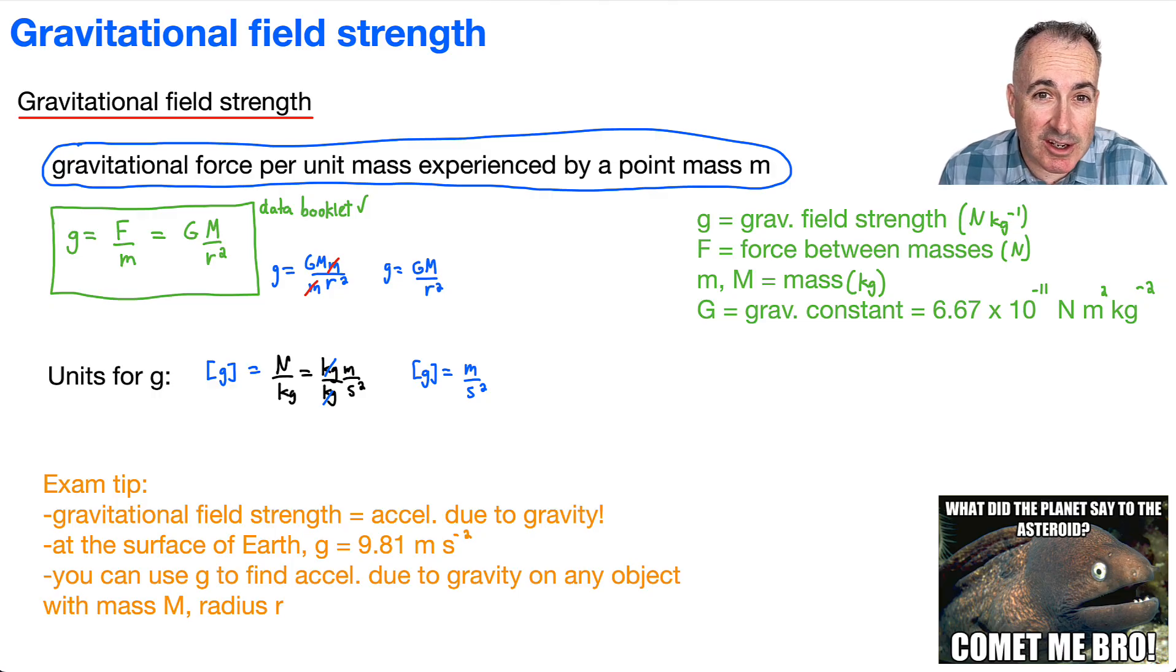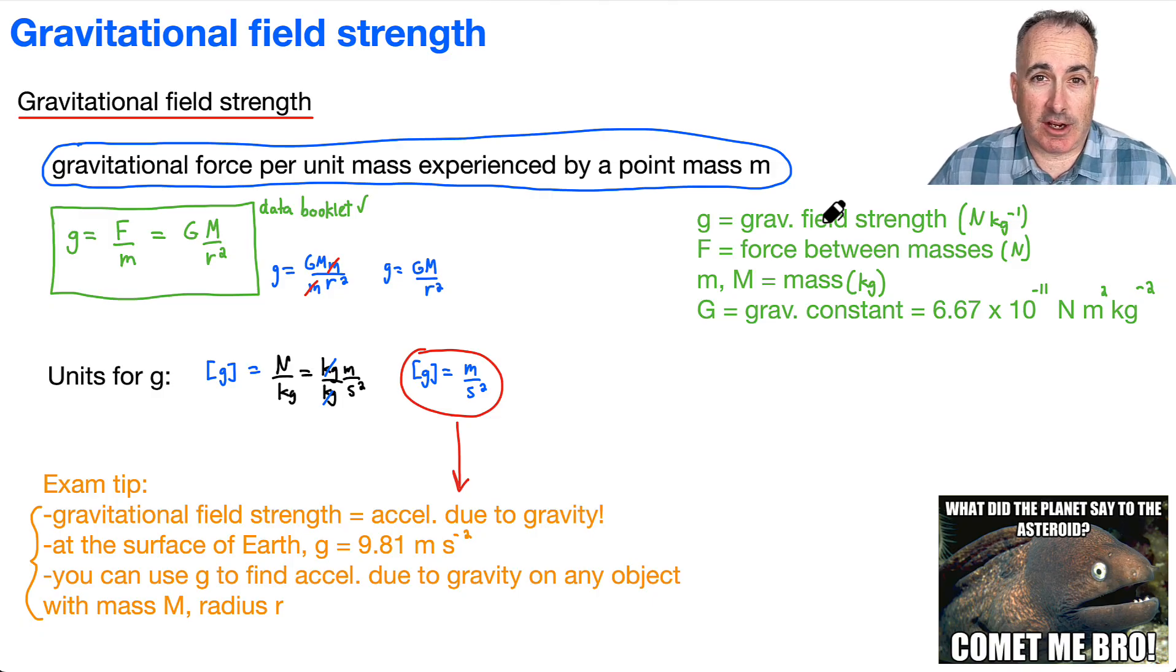And doesn't that seem like the units for an acceleration? That's why I think it's really nice to see this. So for the exam tip here, these are super important: the gravitational field strength is the acceleration due to gravity. So that means in a question, if you're asked, what's the gravitational field strength at the surface of the Earth? That's actually 9.81 meters per second squared. But this is really useful because you can use this idea to find the acceleration due to gravity on any object with mass M and radius r. As long as you know the mass of the planet and the radius of the planet, you can figure out the gravitational field strength, which is the same as the acceleration due to gravity.